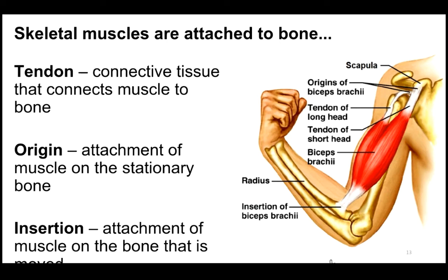Muscles usually act in antagonistic or synergistic pairs. An antagonistic pair would be the biceps and the triceps — when you contract the bicep, the tricep has to be relaxed in order for the bone to move. Synergistic muscles are where muscles work together as opposed to in opposite ways.